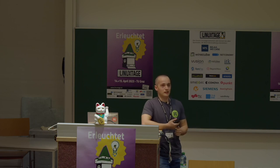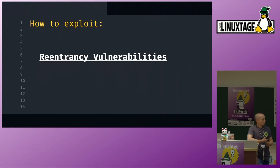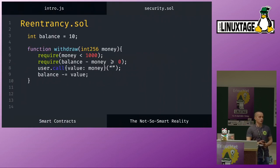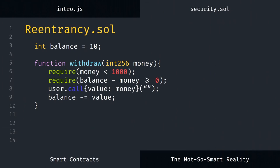Now we're going to look at the last one — the very classic Solidity vulnerability called a re-entrancy attack. For this we have our same contract as before. We've learned from our failures and are now using normal integers instead of unsigned integers. We have our withdraw function, we check if the money we're going to withdraw is less than 1,000, and we check if the balance minus the money is greater than or equal to zero. So we could only withdraw as much as our balance — that would be the idea. And then we send the user back the money and decrease the balance.